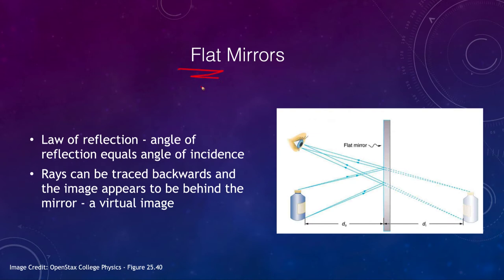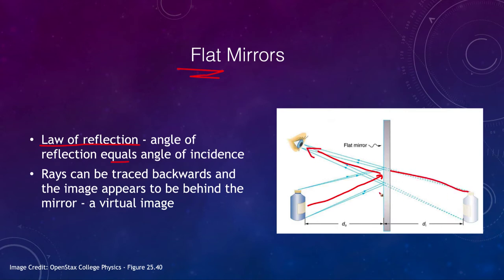One type of mirror with which you're familiar is a flat mirror. A flat mirror will reflect light off of it directly, and if you recall the law of reflection, the angle of incidence equals the angle of reflection. So as things come in, they bounce straight off. If there is an object and light travels to the mirror and bounces back to somebody's eye, we look and see the image behind the mirror. We can trace those rays backwards and we will see a virtual image — not an actual image, but a virtual image. The light rays don't actually hit there, so a flat mirror produces a virtual image.